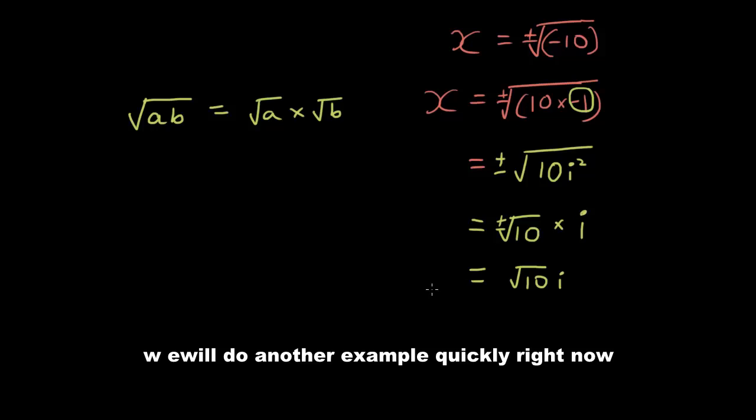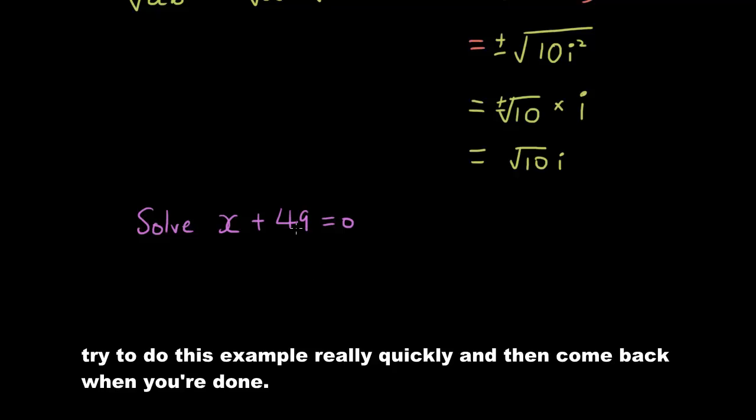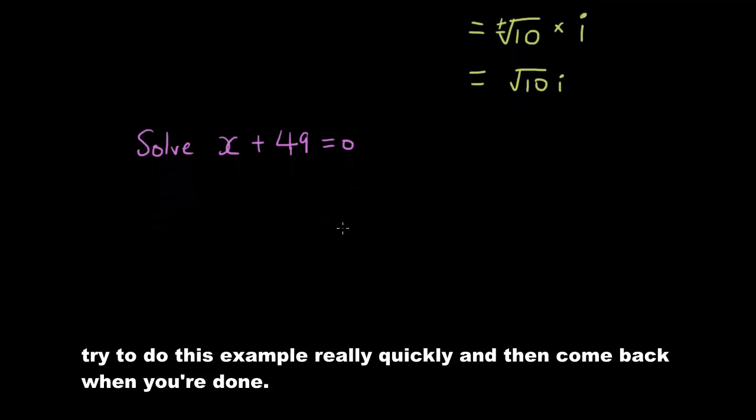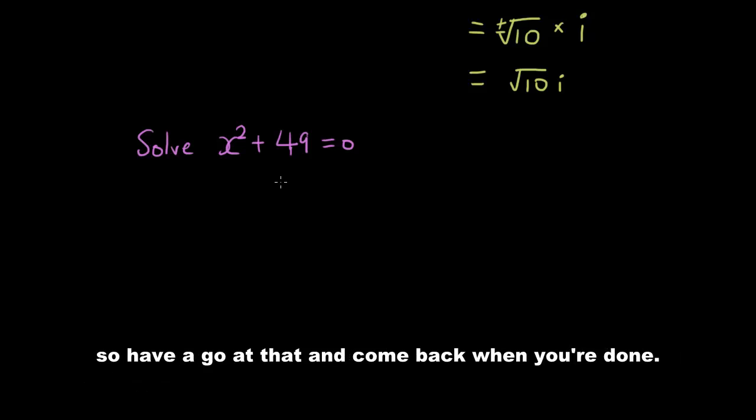We will do another example quickly right now. So try to do this example really quickly and then come back when you're done. I forgot the little squared symbol. Otherwise, it'll be a bit too easy. So have a go at that. Come back when you're done.